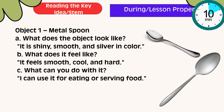Here are the possible answers. For object number 1, which is a metal spoon — What does the object look like? It is shiny, smooth, and silver in color. What does it feel like? It feels smooth, cool, and hard. What can you do with it? I can use it for eating or serving food.